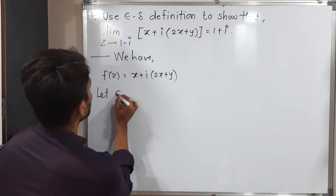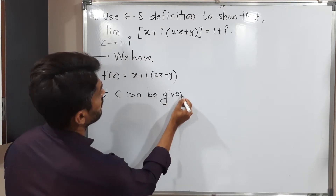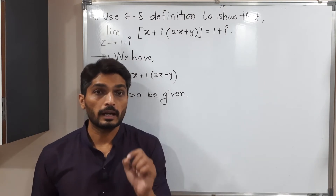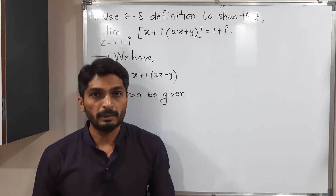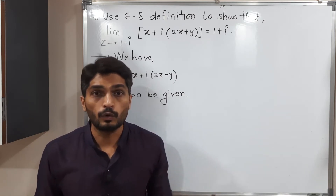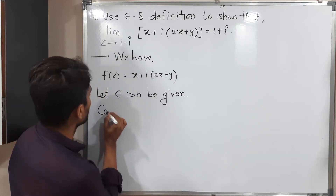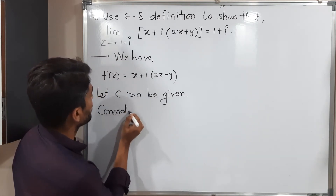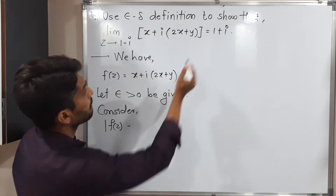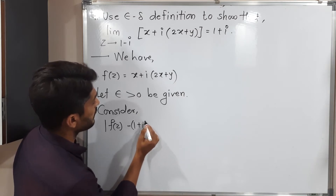For this epsilon, we have to find delta which will satisfy the definition. But before that, we will do some basic calculation, and after that we will go for delta. So let us find — consider — I'm going to find the value of mod f of z minus 1 plus i.